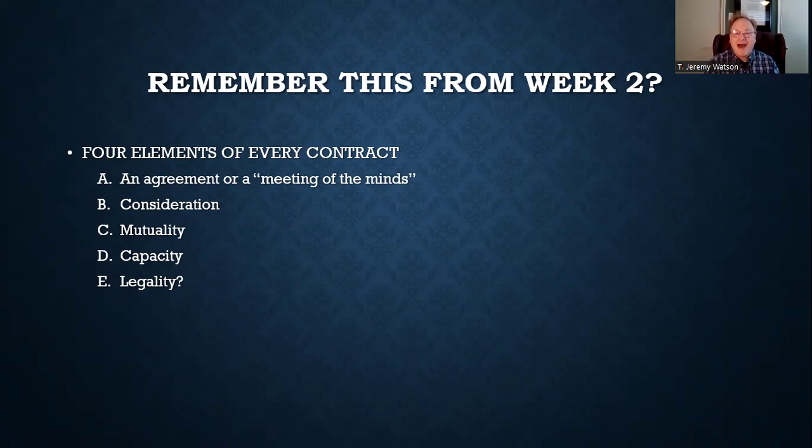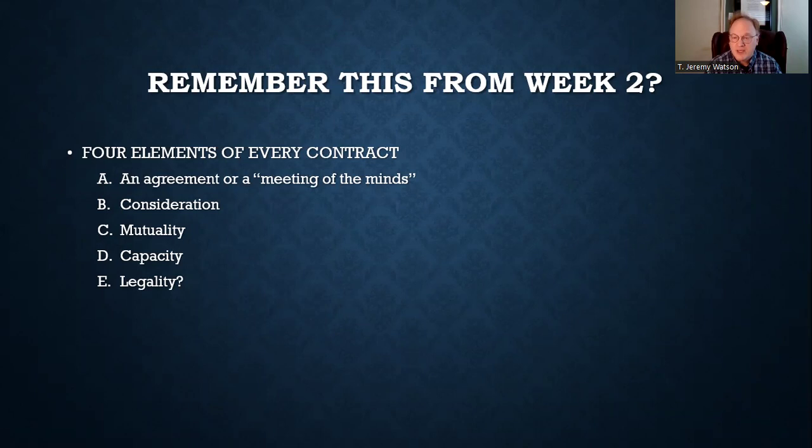Let's go back to the basics and start from the beginning. Remember, there are five elements — your book says four, but we've got five. We can keep talking about whether legality and capacity are elements or conditions, but either way, you've always got five things to consider with every contract: agreement (meeting of the minds), consideration, mutuality, capacity, and legality.